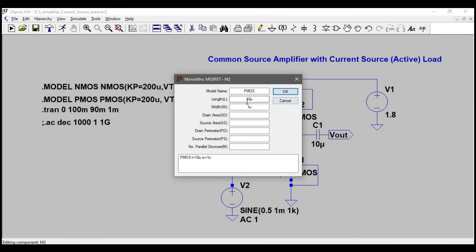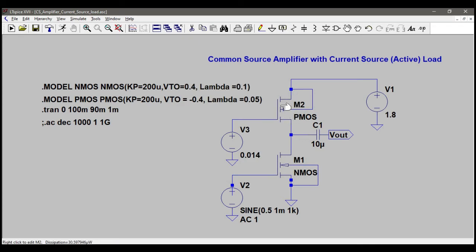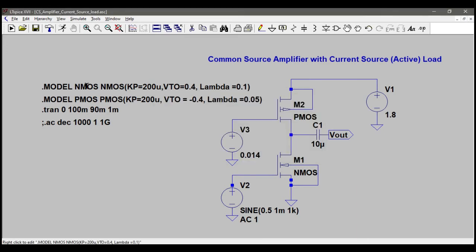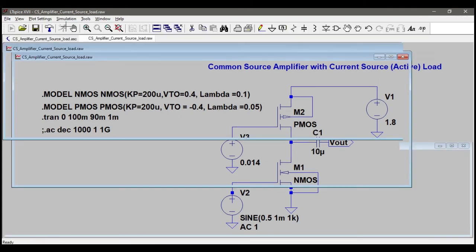And PMOS has length 10 micro and width 1 micro, which makes it 0.1 W/L. And I specified the process parameters using these spice directives. You can also do that by using this .model operator and typing .model or something like that. Remember that these are not case sensitive.